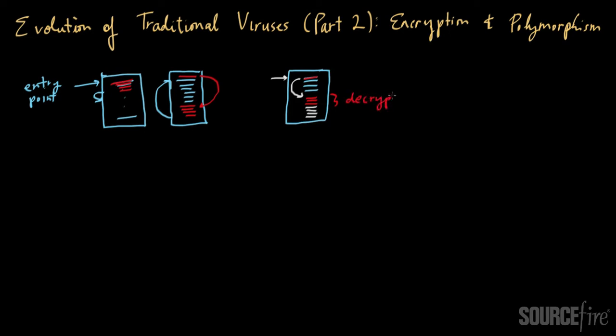The decryption loop would in turn decrypt the encrypted payload. And what you would have then is actually a raw, unencrypted virus. And really the decryption routine after it's done would then execute this part of the virus.